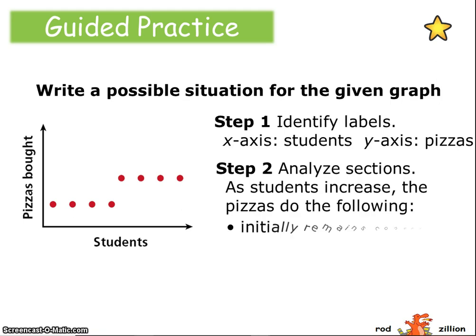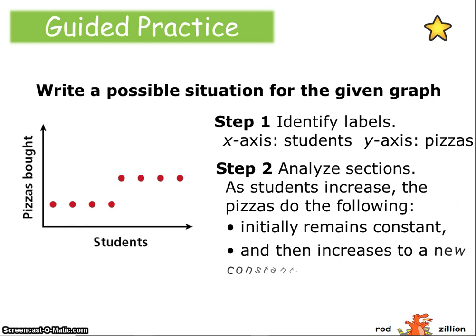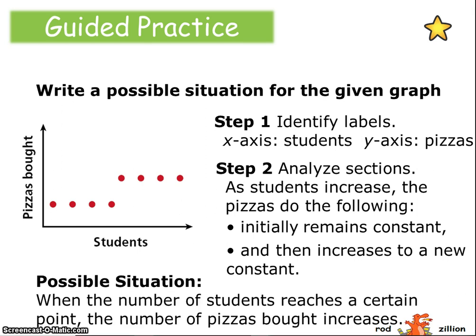I know students is the x-axis, number of pizzas is the y-axis. It initially remains the same, remains constant, until a certain number of students is reached, and then it increases to a new constant. So perhaps something like this: when the number of students reaches a certain point, the number of pizzas bought increases. Perhaps another group of friends showed up and then they bought a whole other pizza.